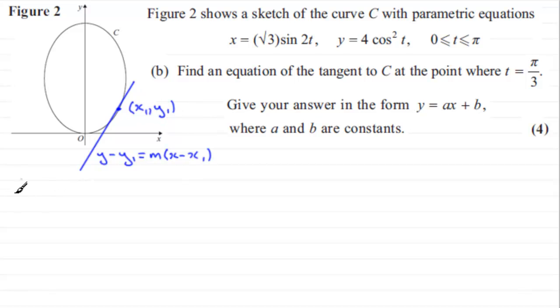To get x and y, we just say when t equals π/3, substitute that in for our value of t. So x would equal √3 multiplied by the sine of 2t, so that's sine of 2π/3. Remember, if you're working with your calculator, check that it's in radians mode.